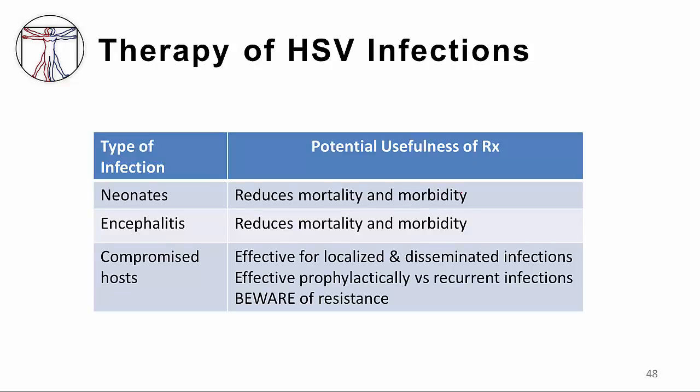These are indications where antiviral therapy must be used because the infections may be so severe. In neonates, antiviral therapy — again, usually acyclovir — has been demonstrated to reduce the morbidity and mortality of neonatal infections, and there is no question it must be used in an infected neonate. In herpes encephalitis, because the untreated mortality rate is about 70%, antiviral therapy must be used. Because herpes infections may also be very severe in compromised hosts — such as bone marrow transplant recipients or those with immunodeficiency — antiviral therapy is generally used, though long-term use may lead to resistance requiring alternate antivirals.